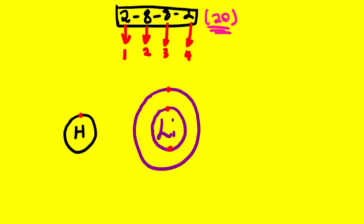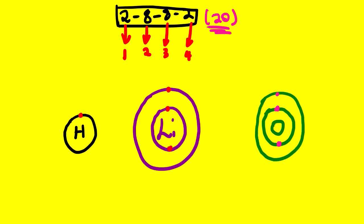Now let us look at oxygen. Oxygen is element number 8, so we expect eight electrons. We start by filling the first energy level with two electrons, then we move to the next energy level and continue placing electrons three, four, five, six, seven, eight. We now have eight electrons on oxygen's atomic structure.